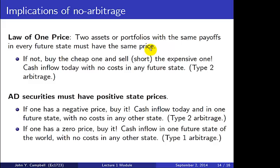The law of one price says that if two assets or portfolios have the same payoffs in every future state, they must have the same price today — there can only be one price. Why must this be true under no arbitrage? If it were not true, you could buy the cheaper of the two assets and sell short the expensive one. Selling short means borrowing the asset to sell it on the market. You'd make money today because proceeds from the short exceed the cost of going long, with no costs in any future state — a type two arbitrage, a money machine.